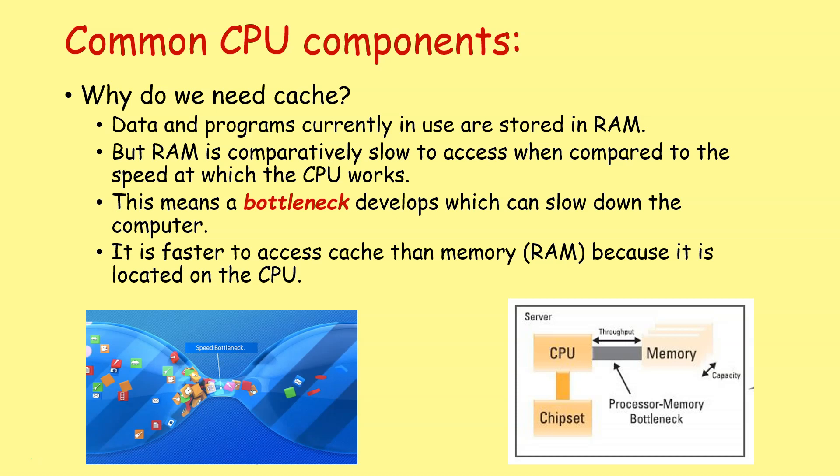Well, most data and programs currently in use are stored in RAM. But RAM is comparatively slow to access compared with the speed that your CPU operates at. It just takes time to go to RAM, find the data or instruction, and then move it back to the CPU. This means we have a kind of bottleneck that develops which can slow down the computer. Sometimes we refer to this as the von Neumann bottleneck, and we'll study von Neumann architecture a little bit in the next lesson. So it's faster to access instructions and data held in cache than in main memory or RAM because it's located on the CPU. It can be accessed really quickly. So it's just this temporary store of all the frequently used data and instructions just so your CPU can keep operating at close to 100% efficiency.